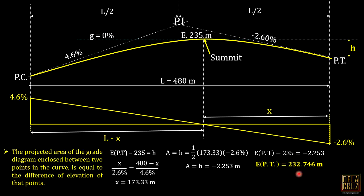That's Sample Problem 1. Remember all the properties of a parabola curve to solve these problems. Also note that the stationing of a parabolic curve is measured horizontally — not along the curve itself. The key principle is: the projected area of the grade diagram enclosed between two points on the curve equals the difference in elevation of those points, and those points must be on the curve.